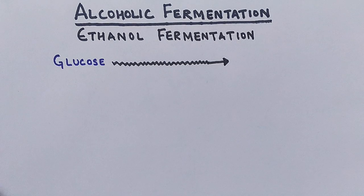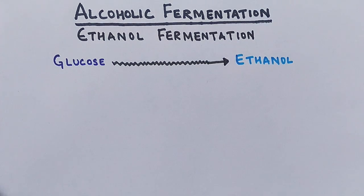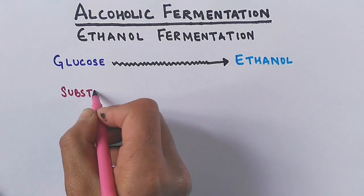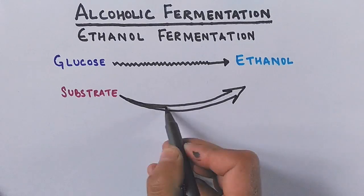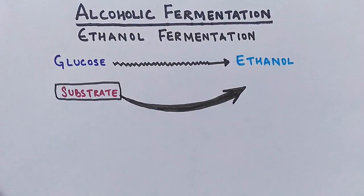The glucose molecule goes through a process called glycolysis and forms pyruvate, which is then ultimately converted into ethanol. This alcoholic fermentation is found in lower eukaryotes — that is, yeasts — where the glucose molecule gets converted into ethanol as the final product.